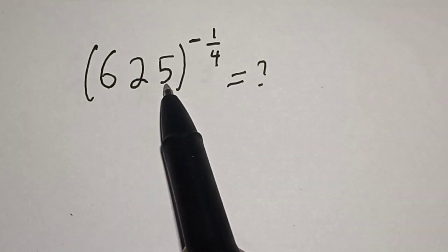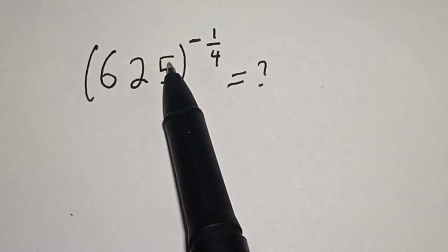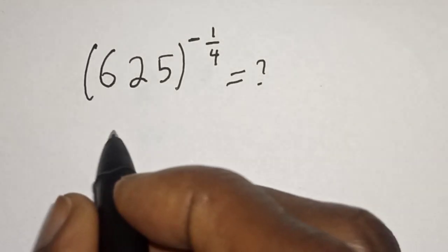Hello, welcome to Magis. In this class, we want to simplify this math problem. 625 to the power of minus 1 over 4 is equal to what? Like, share, comment and subscribe.